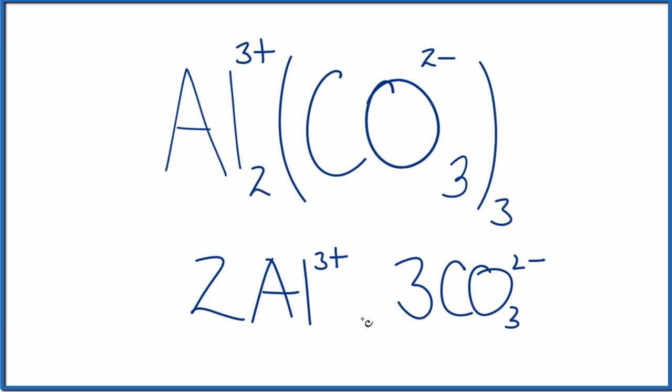So in answer to our question, we have two aluminum ions, three carbonate ions, total of five ions in this one formula unit here of aluminum carbonate. This is Dr. B. Thanks for watchin'.